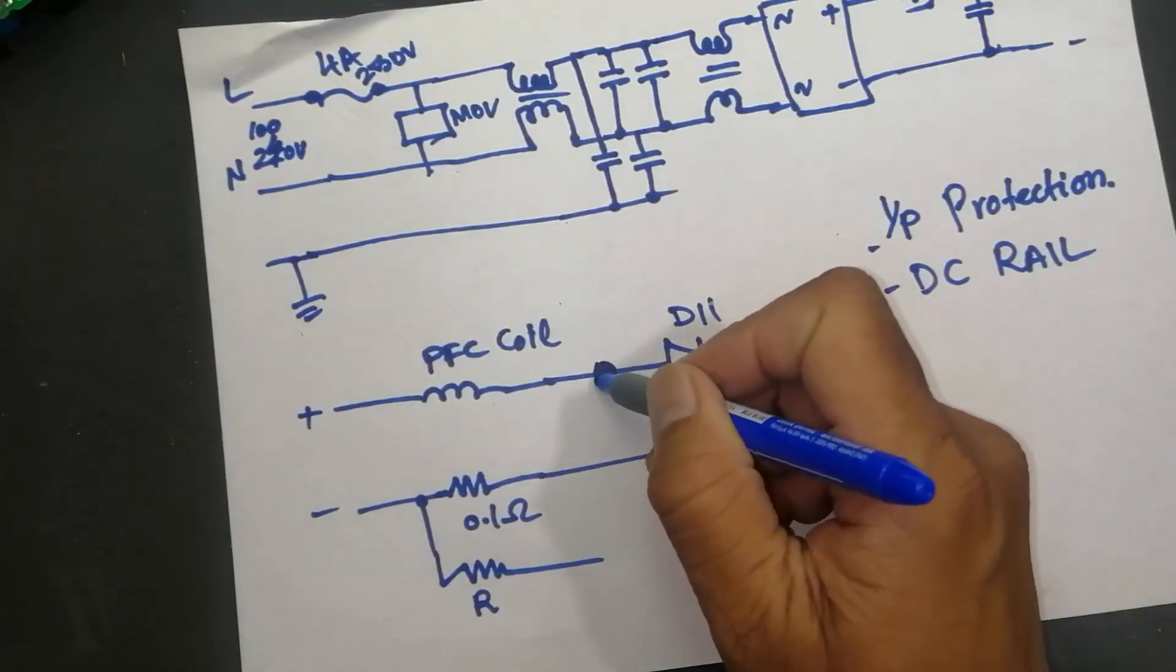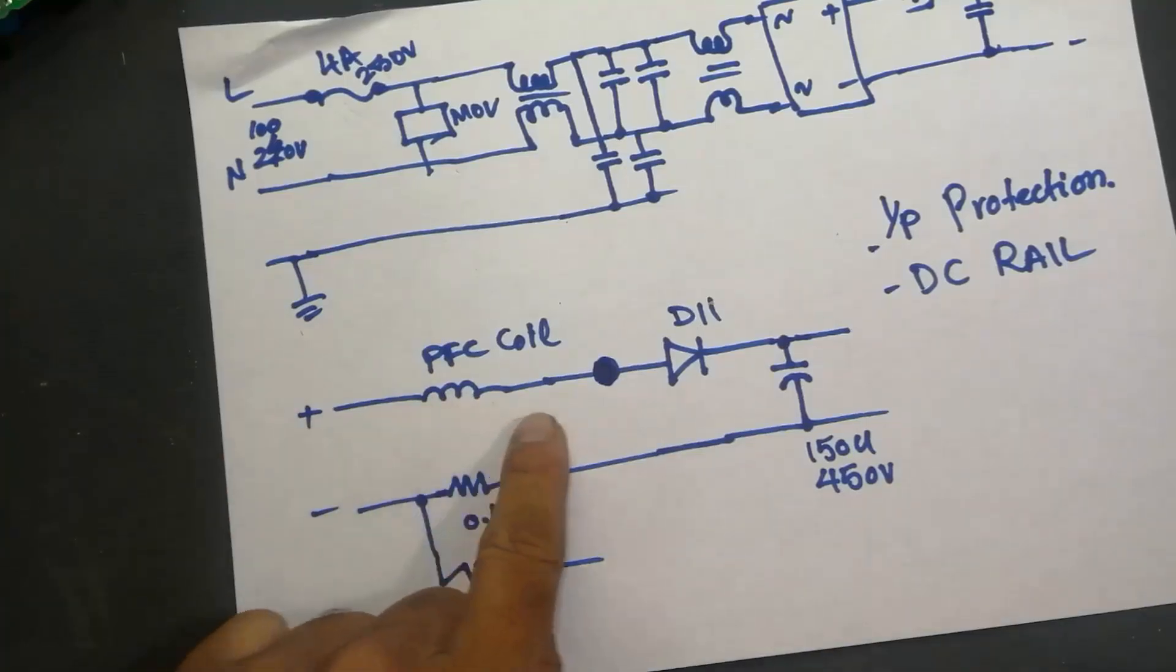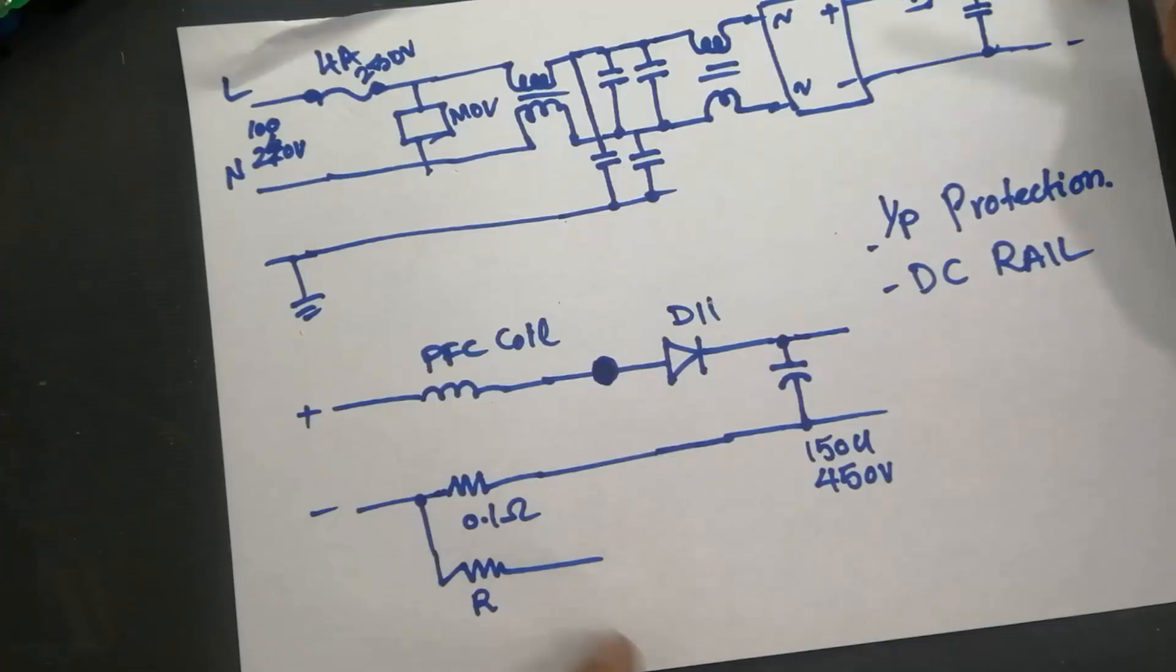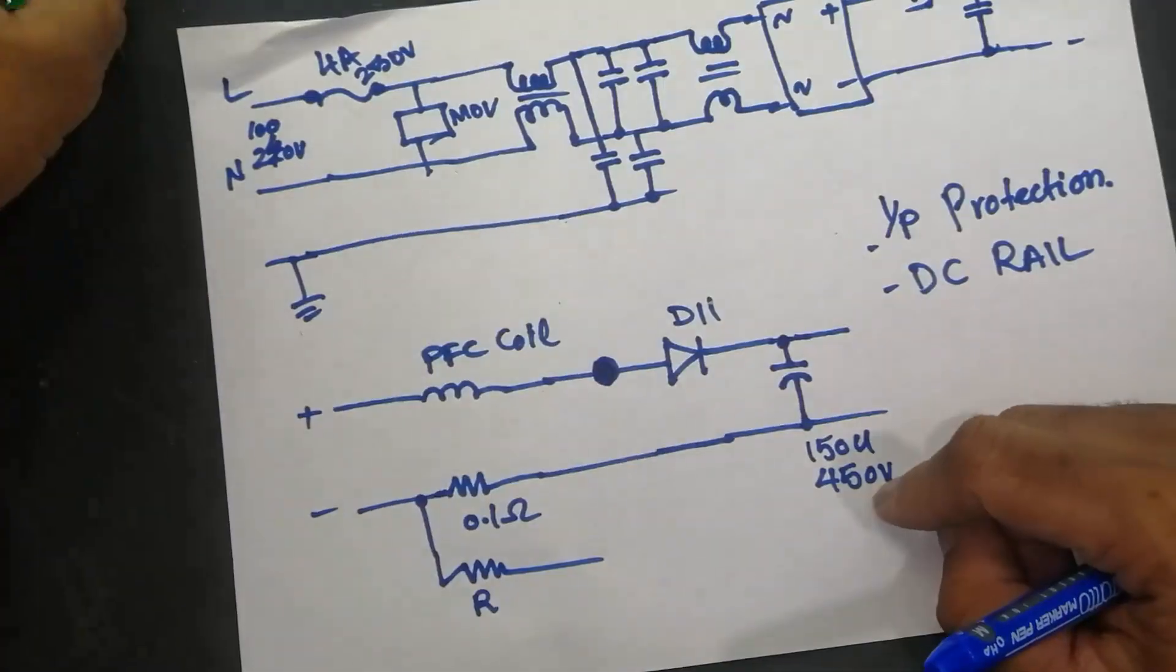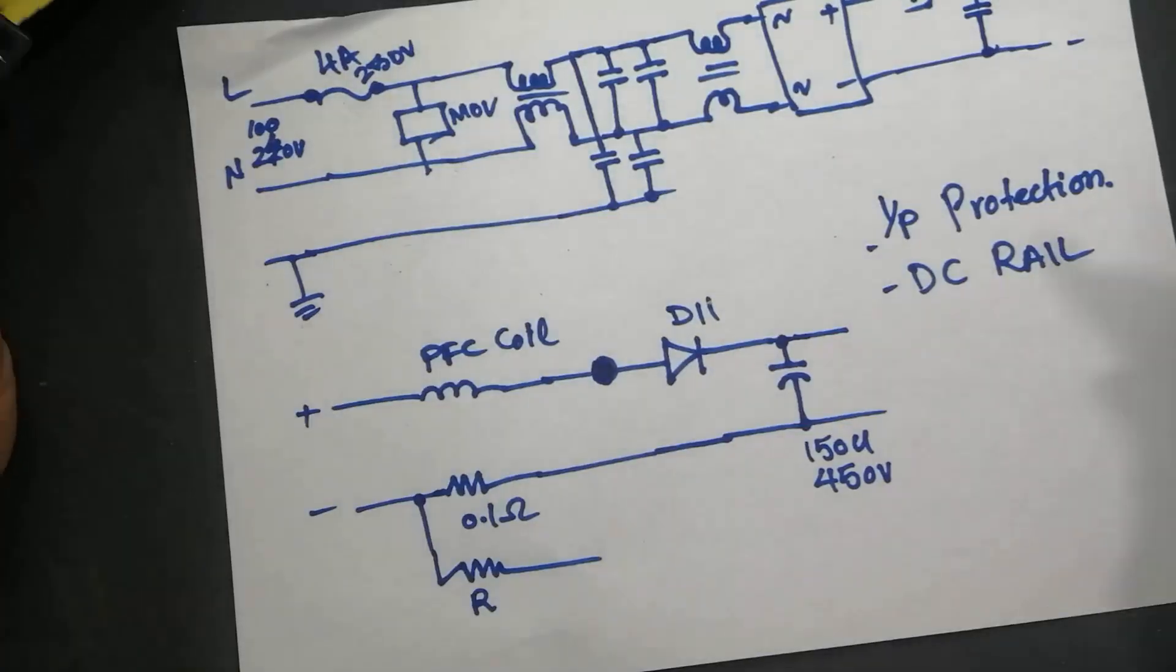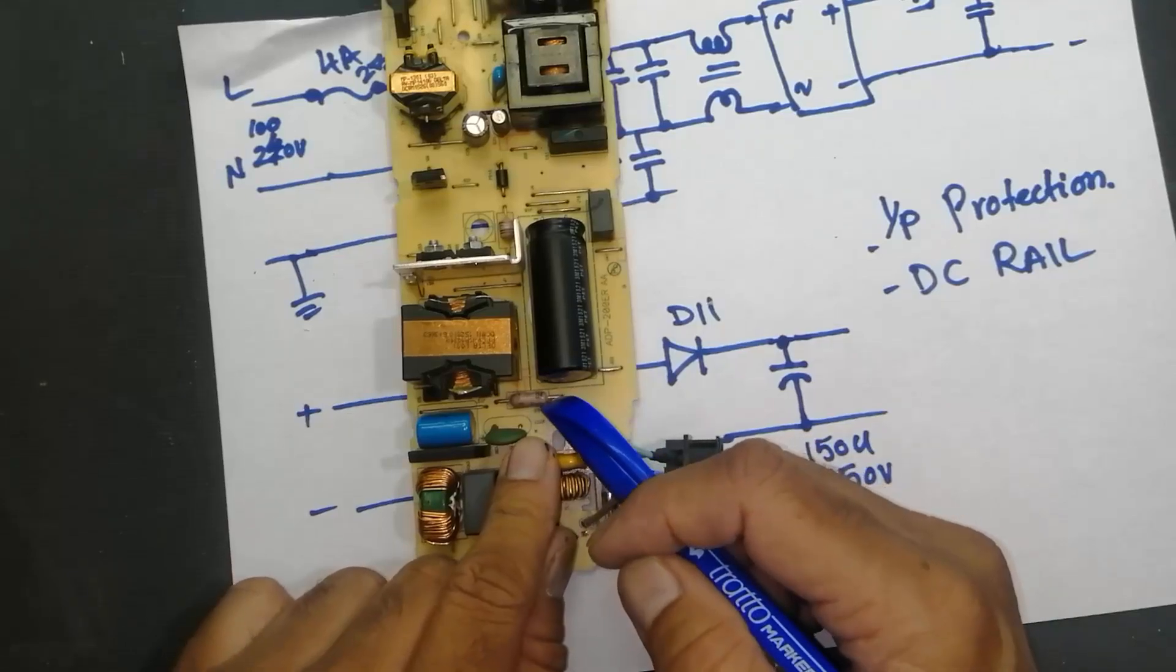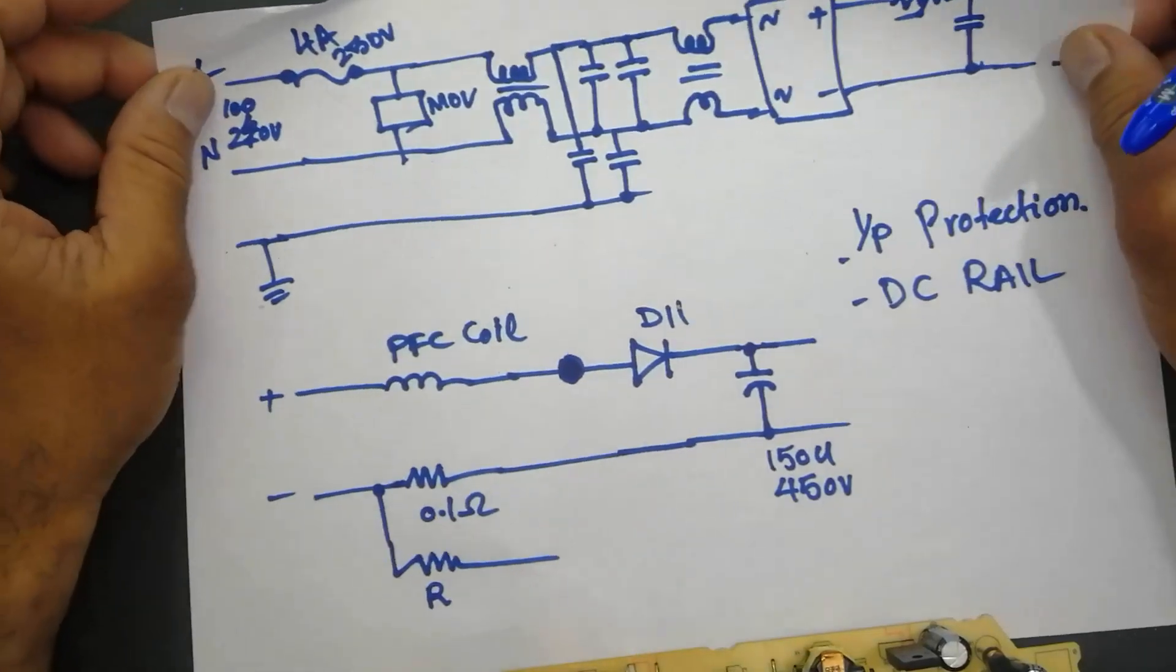In normal condition when this PFC circuit, we will discuss this point in our next video. How this circuit will work? Normally the voltage will reach here and this voltage will pass to the capacitor main bulk capacitor. And this resistor is used to measure the input current, the maximum current.